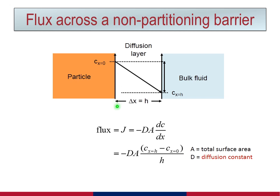The drug concentration is lowest at x equals h, where the diffusion layer meets the bulk fluid. Under these conditions, Fick's first law tells us that the flux of matter across the diffusion layer, symbolized by the letter J, is proportional to the concentration gradient dc/dx.